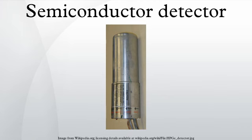Germanium detectors are mostly used for gamma spectroscopy in nuclear physics, as well as X-ray spectroscopy. While silicon detectors cannot be thicker than a few millimeters, germanium can have a depleted sensitive thickness of centimeters, and therefore can be used as a total absorption detector for gamma rays up to a few MeV. These detectors are also called high purity germanium detectors. Before current purification techniques were refined, germanium crystals could not be produced with purity sufficient to enable their use as spectroscopy detectors. Impurities in the crystals trap electrons and holes, ruining the performance of the detectors.